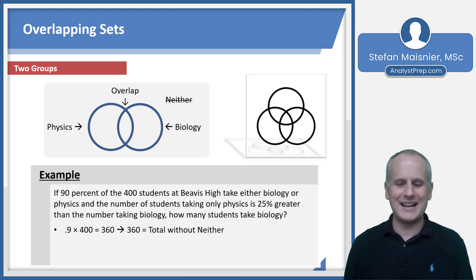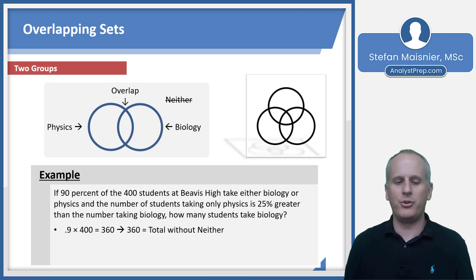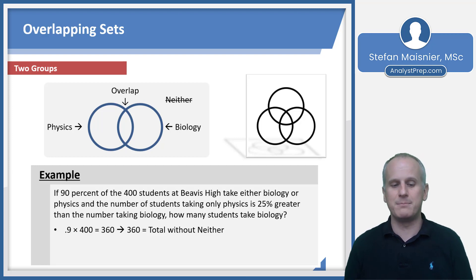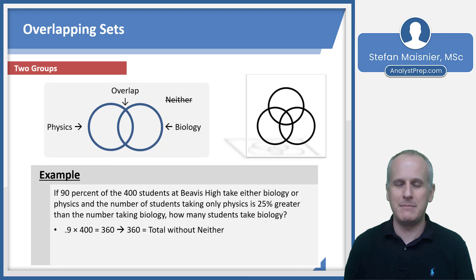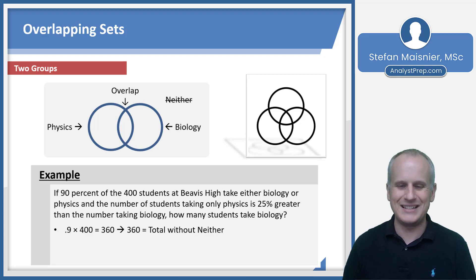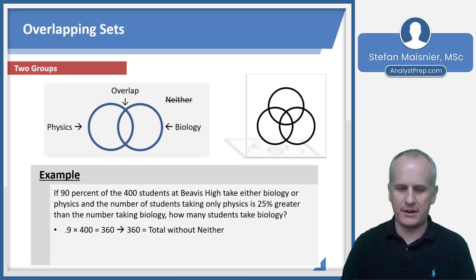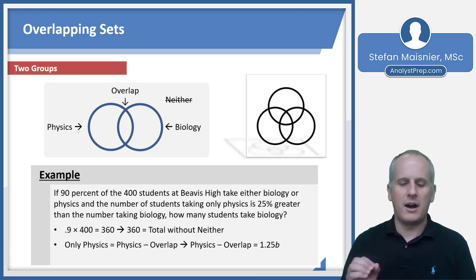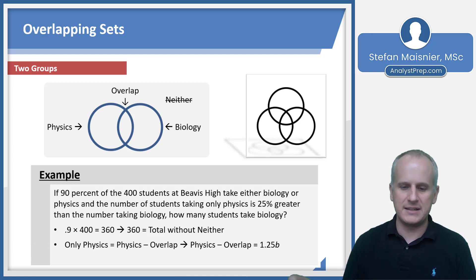We can immediately take 90% of the 400 students at Beavis High by taking 0.9 and multiplying by 400. That's 10% off of 400, so we could also subtract 40 from 400 — potentially faster mental manipulation. Our total without the neithers, meaning those that are physics or overlap or biology only, is going to be 360. So 360 is equal to those in physics plus those in biology minus the overlap counted twice. Our only-physics is physics minus the overlap.